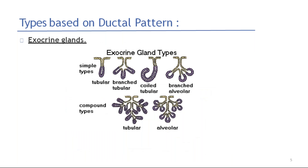Types based on ductal pattern: exocrine glands are divided into simple types and compound types. Simple types are again subdivided into tubular, branched tubular, coiled tubular, and branched alveolar. Coming to compound types, multiple glands will be there — both tubular and alveolar.